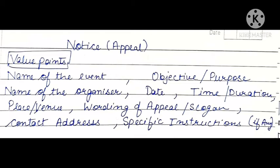In an appeal, first we have to write the name of the event — what is the event we are doing. You should also mention the objective or purpose. Name of the organizer — who is the organizer. Of course, we will tell you the date, time, or duration. Then we will tell the wording of appeal.